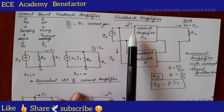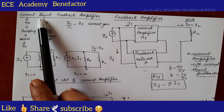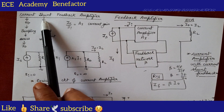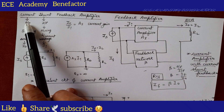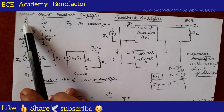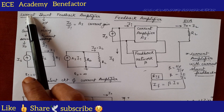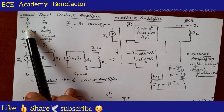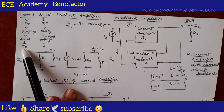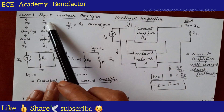For any feedback amplifier, for drawing its equivalent circuit, you need to see the first two words of the topic name. 'Current' is the first word and tells about the output; the second word tells about the input. At the output of the amplifier we do sampling, and at the input we do mixing. Current sampling is done, meaning the parameter sampled is I-naught, current.